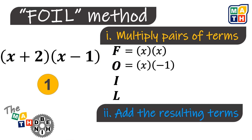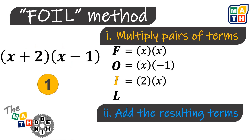Then we have I, which is the product of the inner terms in the given expression. And as for L, we are just going to multiply the last terms.